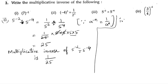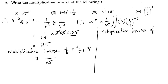Now let us take the fourth bit: 3 by 4 to the power of minus 2. Let us write down its multiplicative inverse. The multiplicative inverse of 3 by 4 to the power of minus 2 is: first let us write down its reciprocal, which will be 1 by (3 by 4) to the power of minus 2.